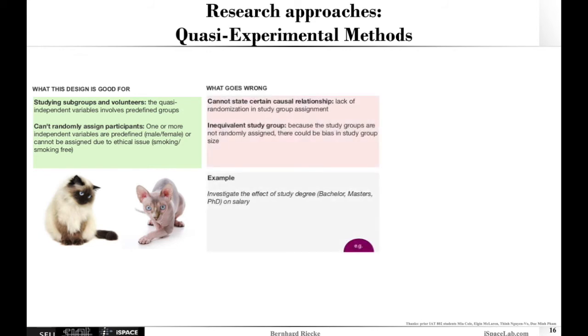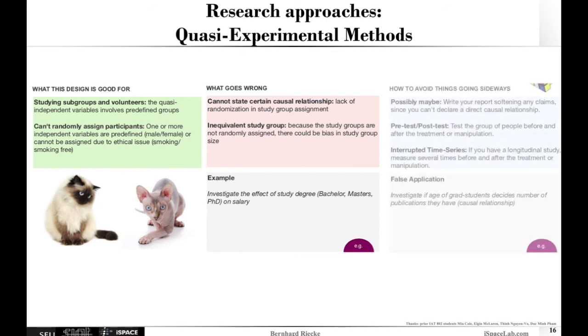What could go wrong is if you try to claim causality in a quasi-experimental method. That's just not feasible. You don't know this because you couldn't randomize the different study group assignments. For example, if you wanted to investigate the effect of having or getting a bachelor, master's or PhD on future salary, yes, you can see if there's a correlation. But because you cannot assign people to getting a bachelor, master's or PhD, you don't know whether there's a causal relationship. There might be something else that gets people to do a PhD.